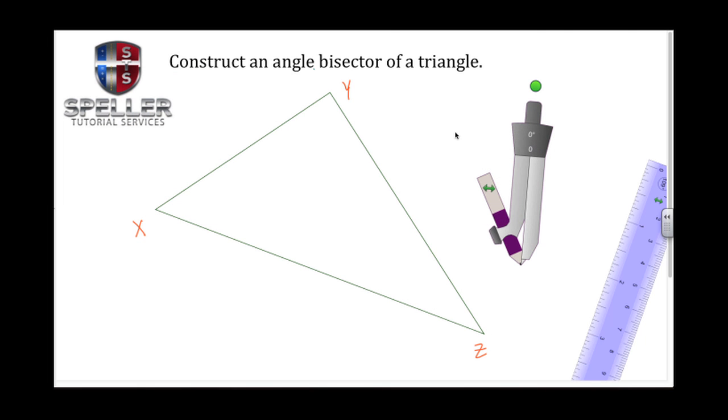Welcome back to Speller Tutorial Services. In today's video, we're going to construct an angle bisector of a triangle, and we're going to bisect angle Z, or vertex Z, of the triangle.